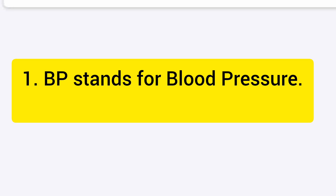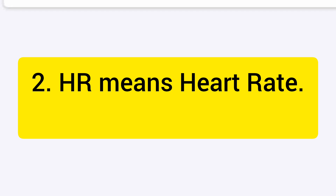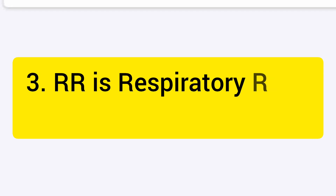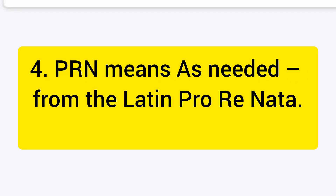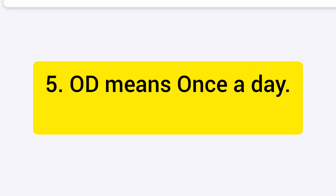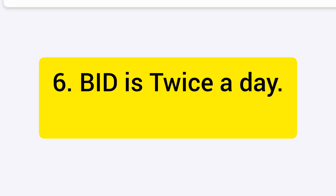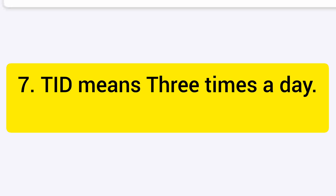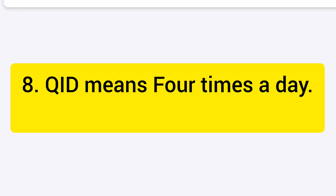BP stands for blood pressure. HR means heart rate. RR is respiratory rate. PRN means as needed. OD means once a day. BID is twice a day. TID means three times a day. QID means four times a day.